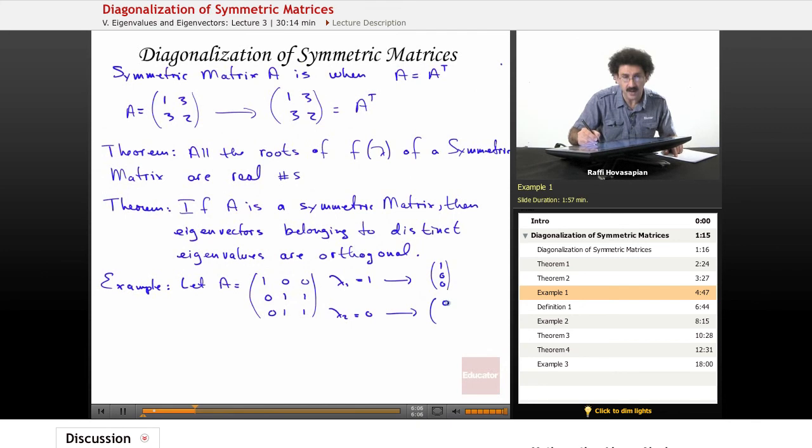eigenspace. Okay. And that gives me the vector 0, minus 1, 1. Lambda 3, the third eigenvalue, is 2 for this matrix. And it yields the eigenvector 0, 1, 1.